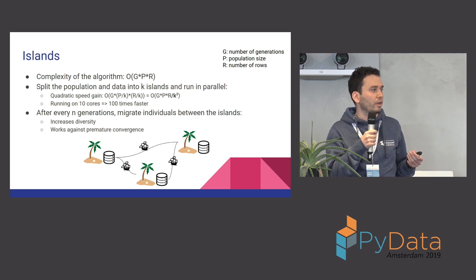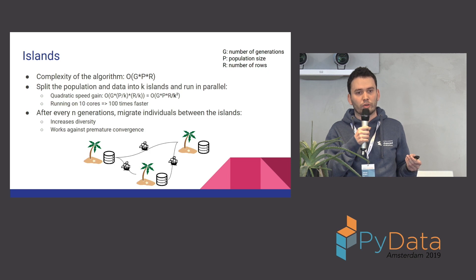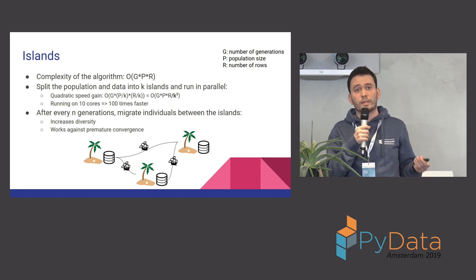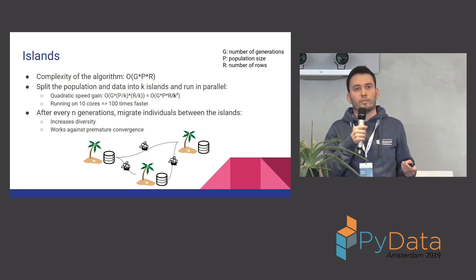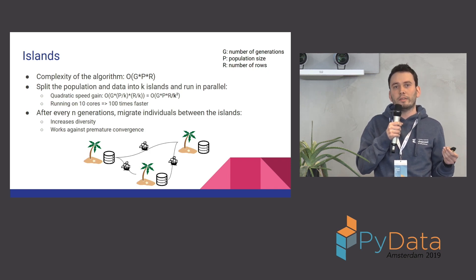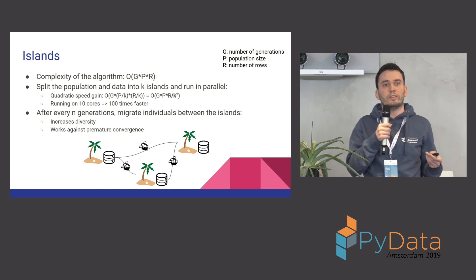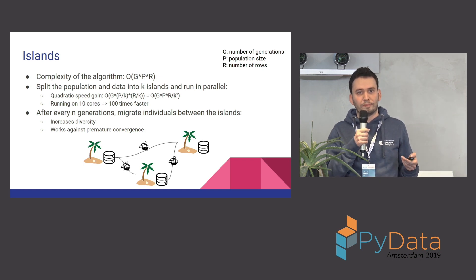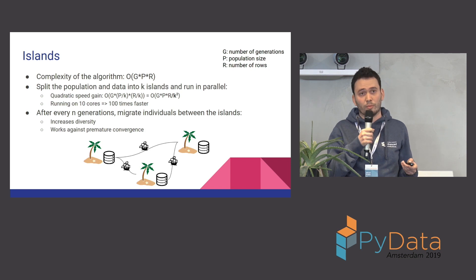The island idea also gives you diversity. Premature convergence is very common in genetic algorithms — you may get a population which is very conservative, getting stuck in a local optimum and never converging to a better one. Since we migrate the individuals between the islands and we also shuffle the data after every n generations, we can avoid this problem. If you have 10 cores, you get 100 times speed improvement.